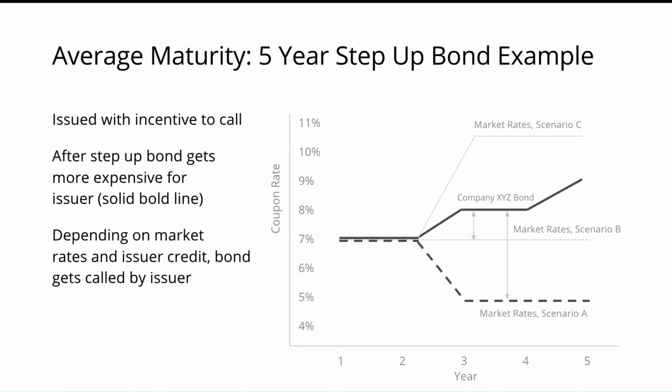Such a high incentive might look like this: the bond carries a coupon of 4.5% for the first 10 years fixed, and afterwards the coupon formula changes to a variable component — say, Euribor plus 600 basis points. This would be a level so high that either the creditworthiness of the corporate would have to weaken substantially, or the bond would become way too expensive not to redeem at the first call date.